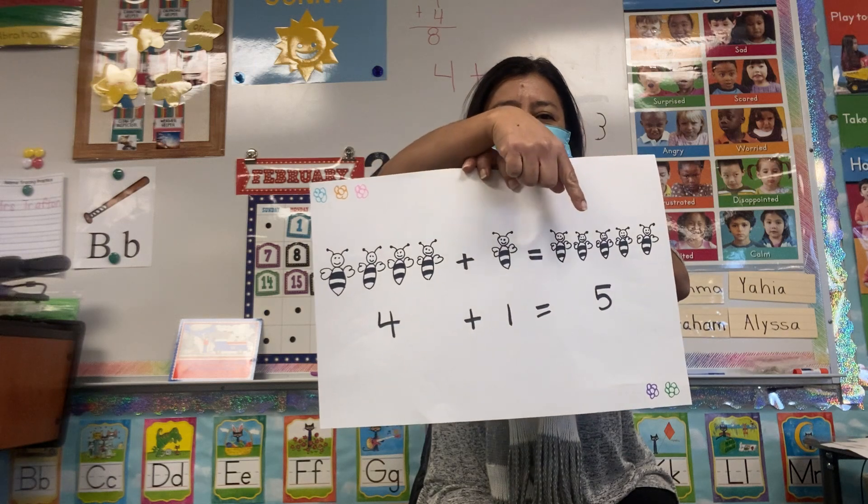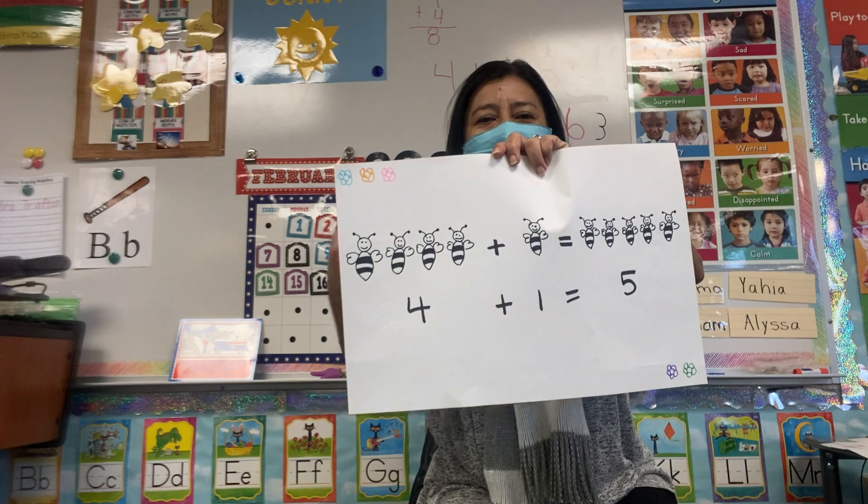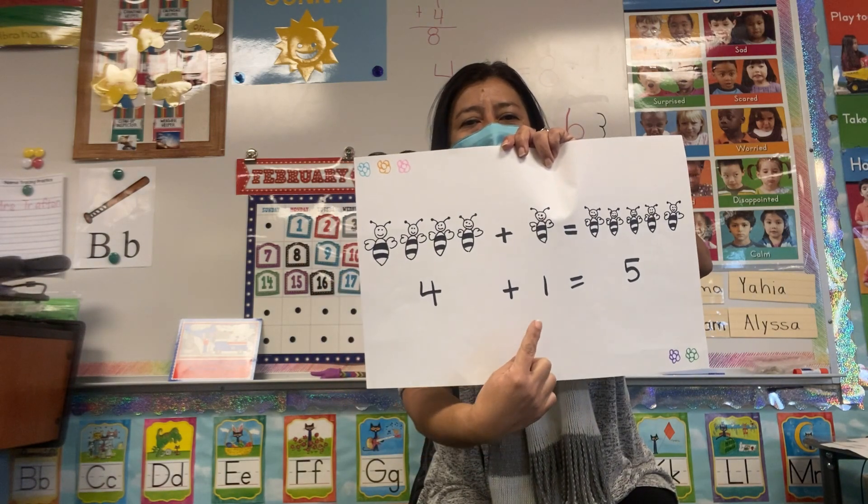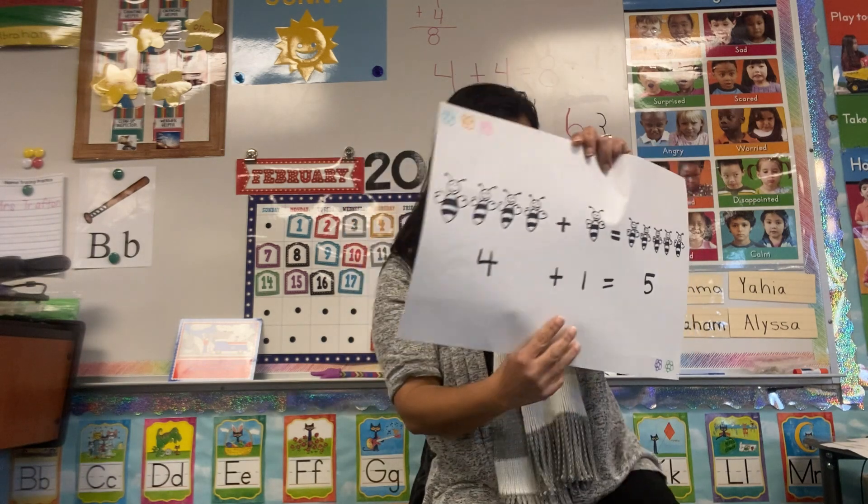One, two, three, four, five. Let's read the numbers. Four plus one equals five. Excellent.